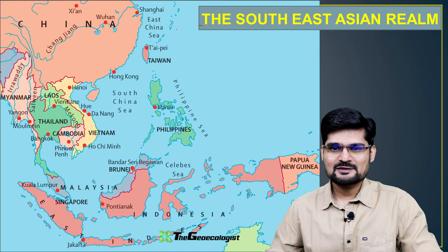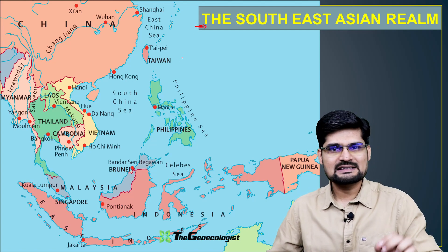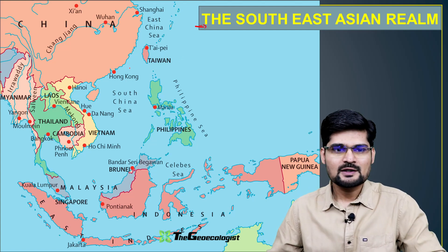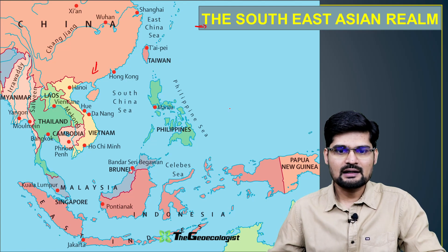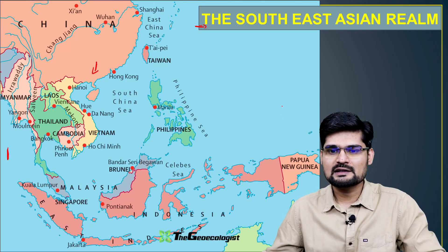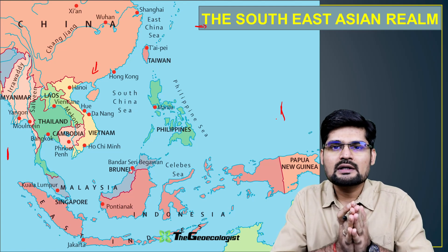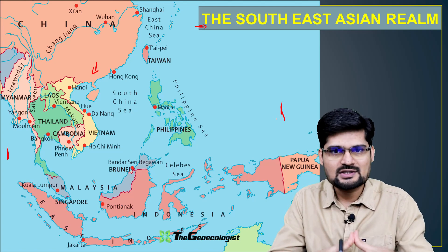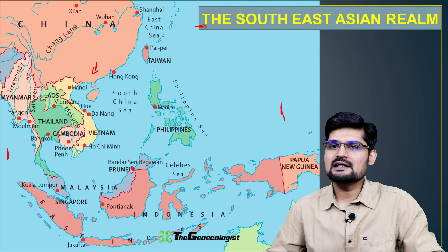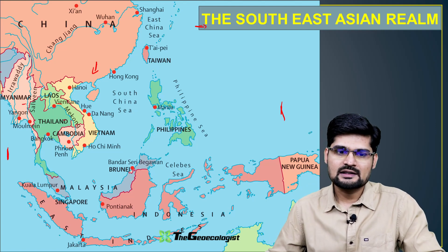Let's discuss about the Southeast Asian region or the Southeast Asian realm. It is south of China and has boundaries with the Indian Ocean and the Pacific Ocean, so many times it's also called the Indo-Pacific region. If you observe the countries here — right from Myanmar, Thailand, Laos, then you have Vietnam, Cambodia, Malaysia.